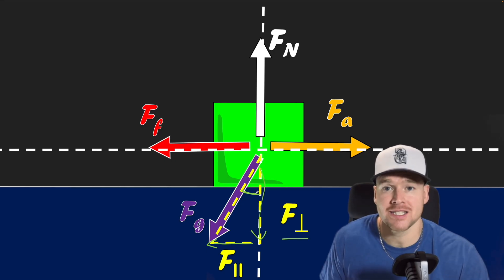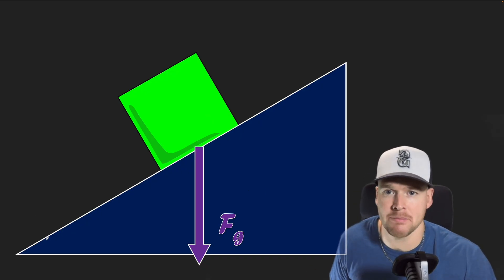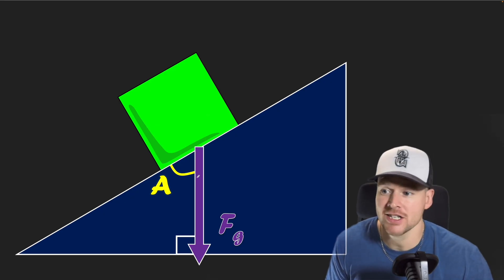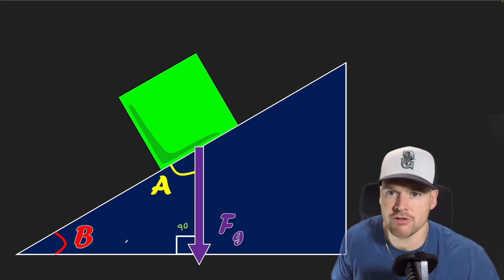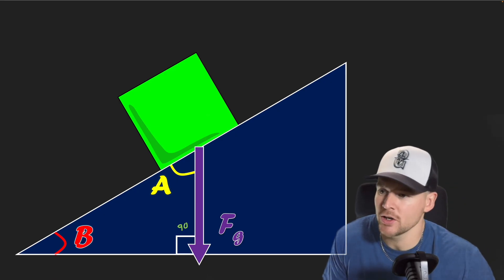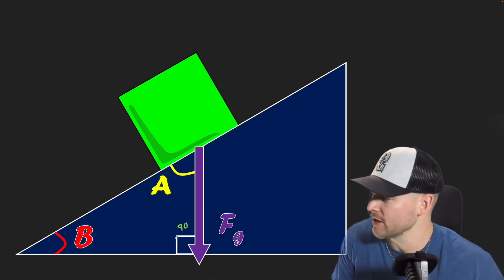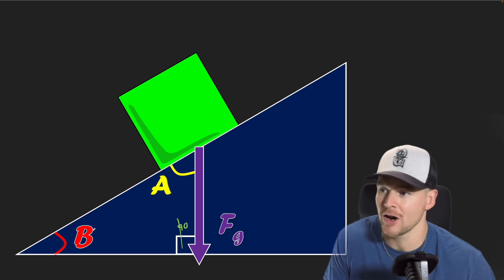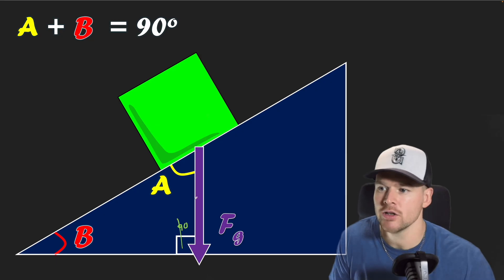You wouldn't have to prove this on a question, but here's how we use the angle of the ramp. I'll call the ramp angle A, and this angle down here is 90 degrees because gravity goes straight down and the base is flat. Looking at the far angle of the triangle, I'll call that angle B. All interior angles add up to 180 degrees, so A plus B plus 90 equals 180, meaning A and B together equal 90 degrees. That's important for breaking FG into components.